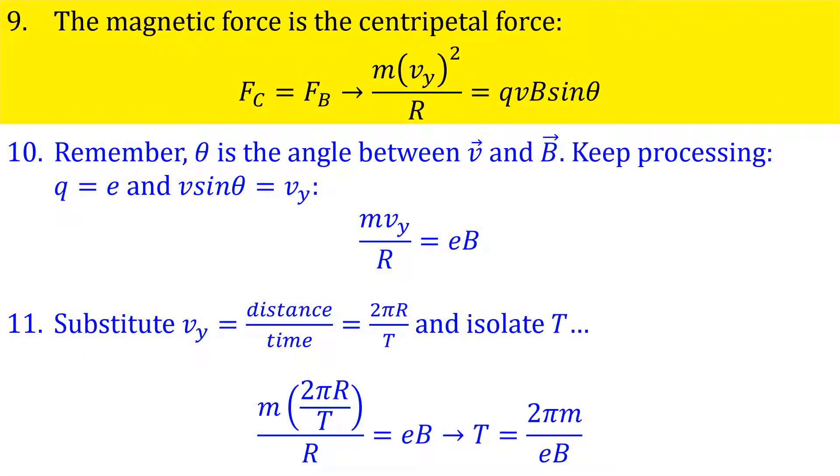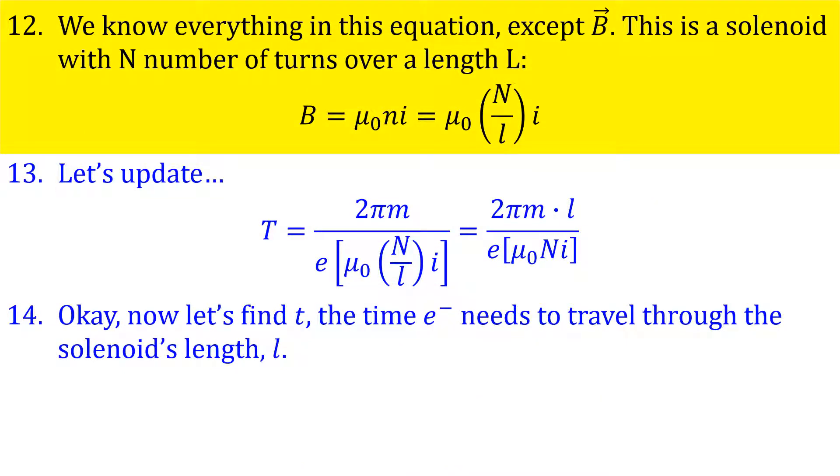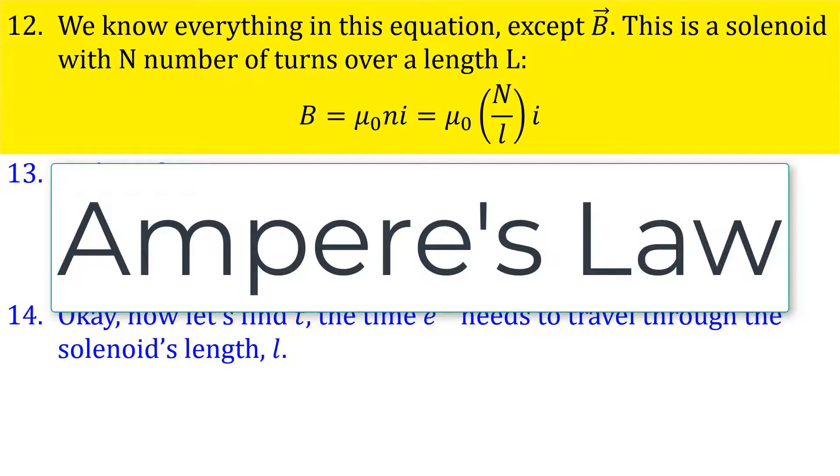The centripetal force is actually the magnetic force acting on the electron as it moves, so we set them equal to each other, we make some substitutions and simplify, and finally we get an expression for T, the amount of time it takes the electron to complete one circle. We know everything in this expression for T except for the magnetic field, but we know what the magnetic field strength is inside a solenoid. We derive that using Ampere's law.